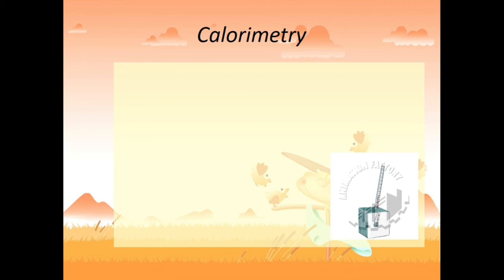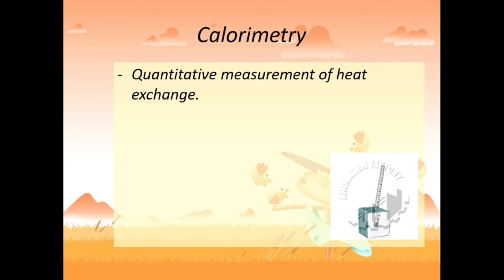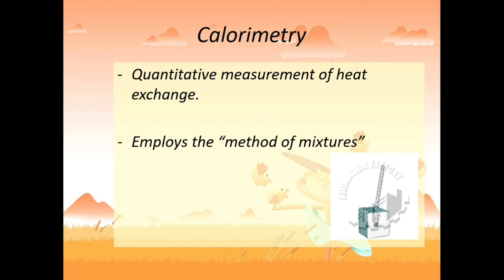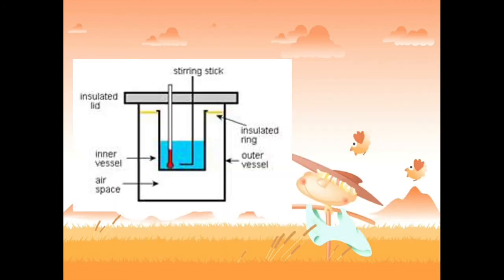Calorimetry is the quantitative measurement of heat exchange from one object to another. It employs the method of mixtures, combining two objects to analyze which releases heat and which absorbs heat. A calorimeter is a well-insulated container — usually made of aluminum — with a stirring stick, a thermometer inserted through a hole, an inner calorimeter, an outer calorimeter, and air space separating them.